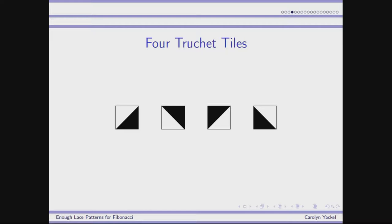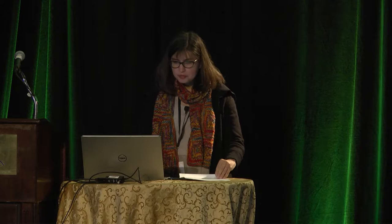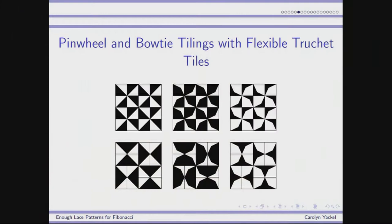I realized I could reconceive of the Templeton square as four truché tiles stuck together. Just to remind you, here are truché tiles. Some people think there are four truché tiles, but secretly we all know there's really just one — they're just rotated. Bob Bosch and Urchin Cully had come up with flexible truché tiles, where you take a point along the diagonal and pull it to make them lighter or darker. Here the pinwheel and bowtie tilings look a little different with flexible truché tiles.